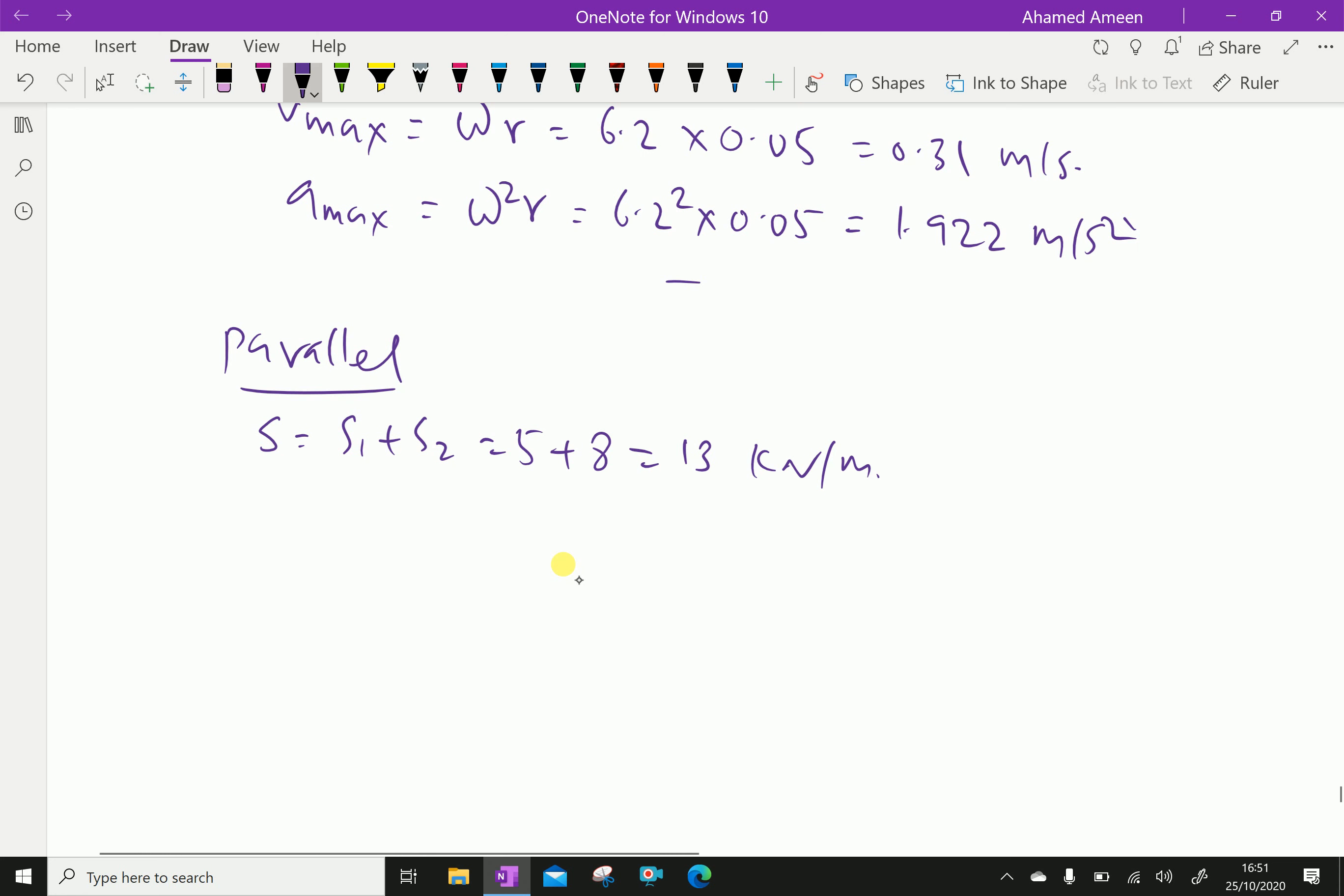Then delta, which is mg over stiffness, that is 0.08 into 9.8 over stiffness 13, which is equal 0.0603 meter. Time period equal 2 pi root of delta by g equal 2 pi into delta equal 0.0603 over 9.8, which is equal 0.493 seconds.